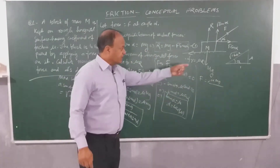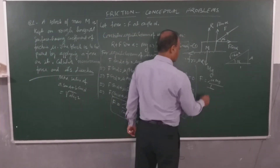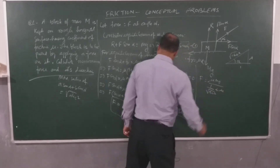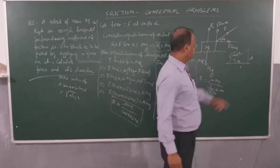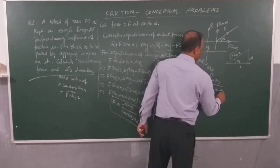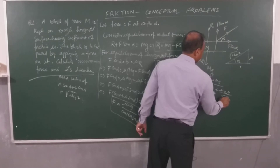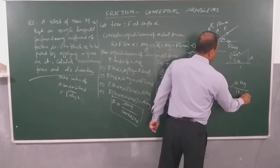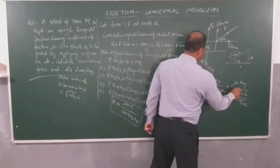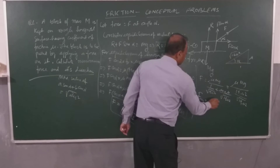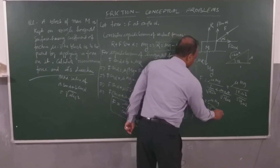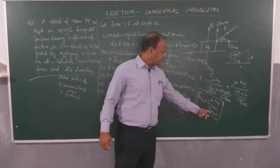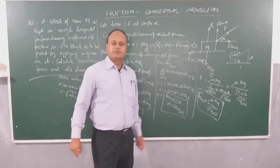Therefore F equals mu·mg divided by [cos alpha plus mu·sin alpha]. Substituting: cos alpha equals 1/root(1+mu²) and mu·sin alpha equals mu² /root(1+mu²). The denominator becomes (1 plus mu²) divided by root(1 plus mu²), which equals root(1 plus mu²). So the minimum value of force is mu·mg divided by root(1 plus mu²), and the direction is alpha equals tan inverse of mu.